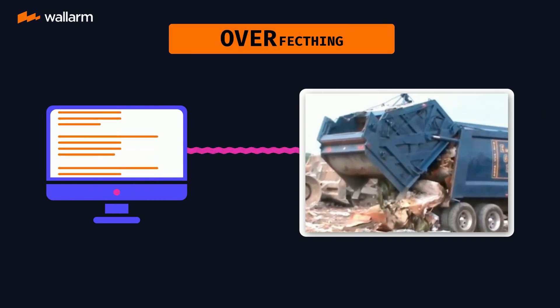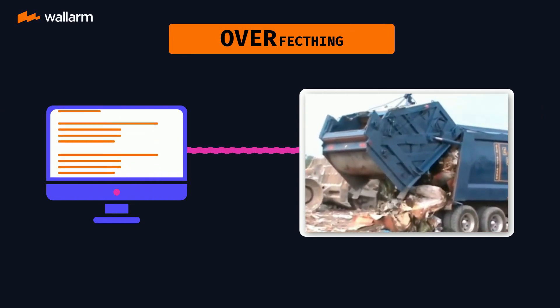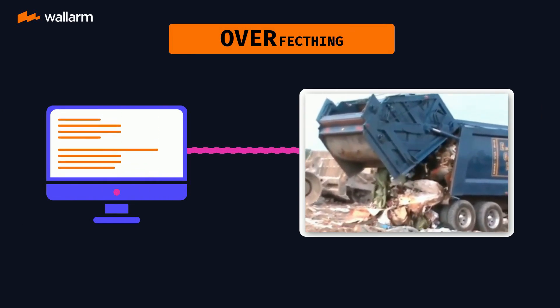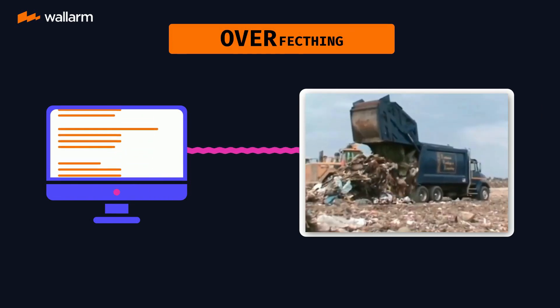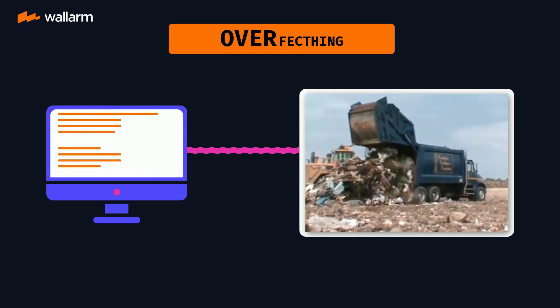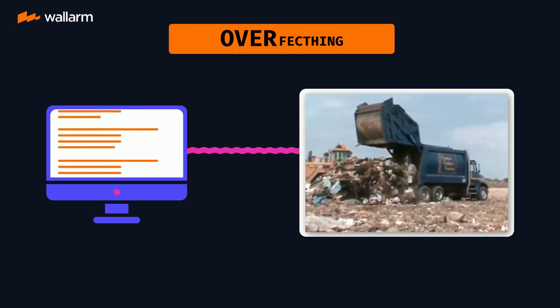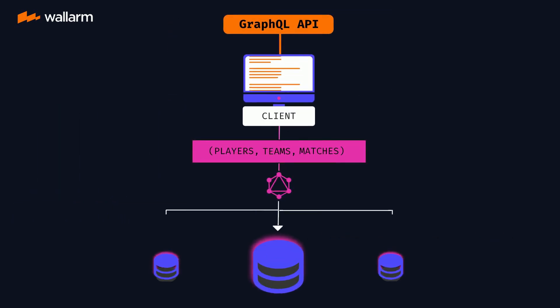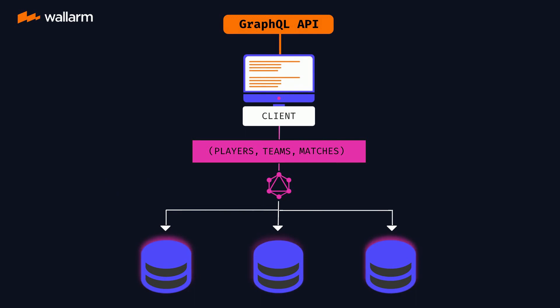In other cases, we may only want a small subset of a data entity, in which case we need to over-fetch from the API — and that, of course, is bad for the environment. Instead of multiple URLs, a GraphQL API has a single entry point.